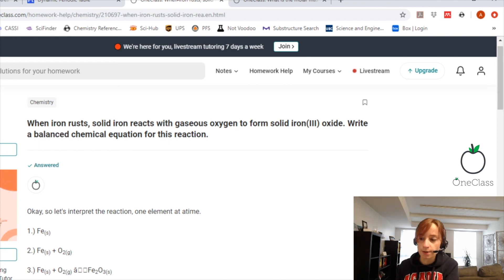When iron rusts, solid iron reacts with gaseous oxygen to form solid iron trioxide. Write a balanced chemical equation for this reaction.